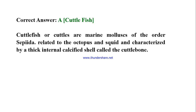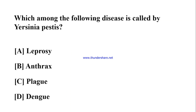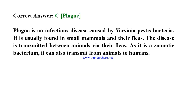Which among the following diseases is caused by Yersinia pestis? A) Leprosy, B) Anthrax, C) Plague, D) Dengue. Correct answer: C) Plague. Plague is an infectious disease caused by Yersinia pestis bacteria. It is usually found in small mammals and their fleas, and the disease is transmitted between animals via their fleas. As it is a zoonotic bacterium, it can also transmit from animals to humans.